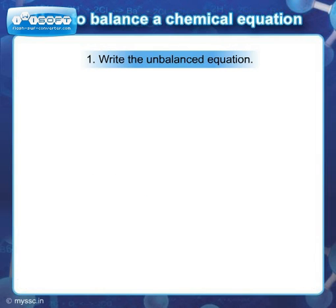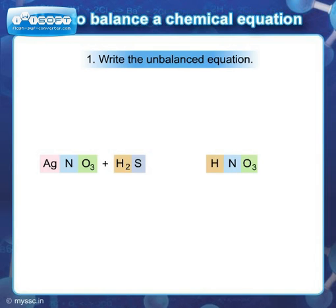Let us write the reactants — silver nitrate and hydrogen sulfide — on the left hand side. Write the products — hydrogen nitrate and silver sulfide — on the right hand side. Separate the reactants and products by putting an arrow between them to indicate the direction of the reaction.